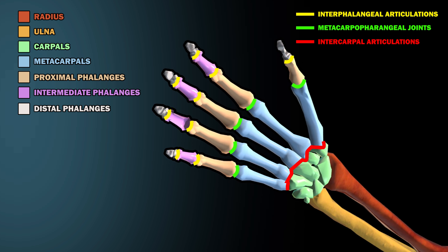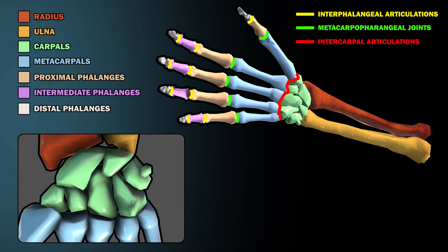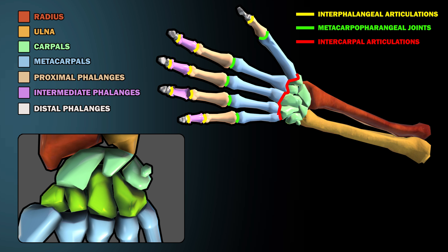Now let's look at the eight carpals, which can be organized into two rows. The distal row are more distant from your body's core and closer to the fingers. The bones in this row make contact with the metacarpals at the intercarpal articulations.